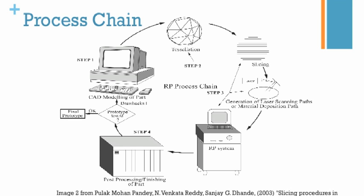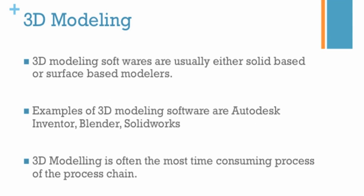The process chain is made up of five steps. The first step is the creation of the 3D model. The next step is data conversion and repairing, after which the 3D model is sliced into many cross-sectional slices. The machine then reads and builds the part layer by layer. After the part is built, it moves to the last step: post-processing.